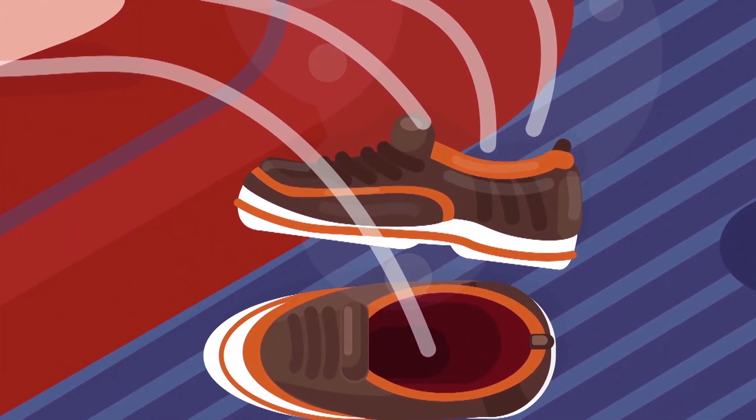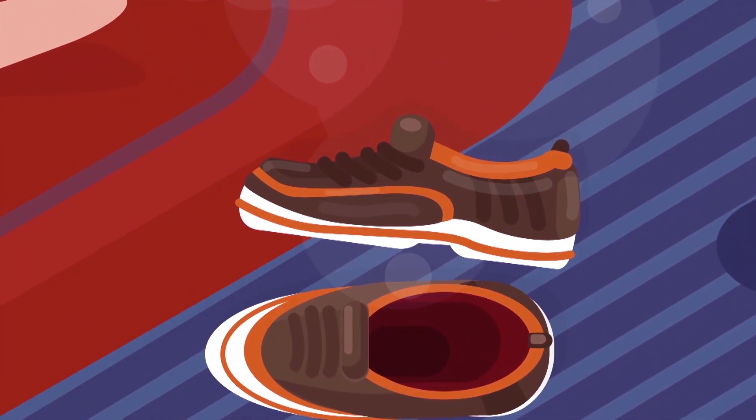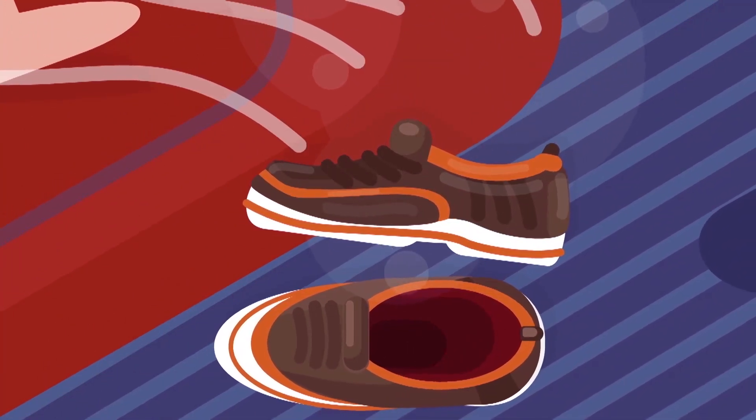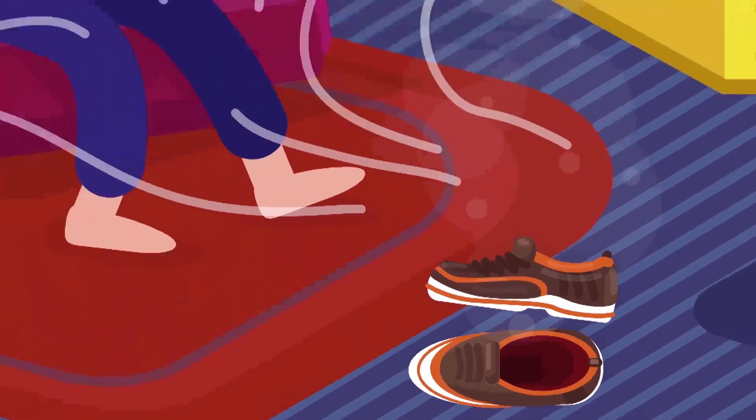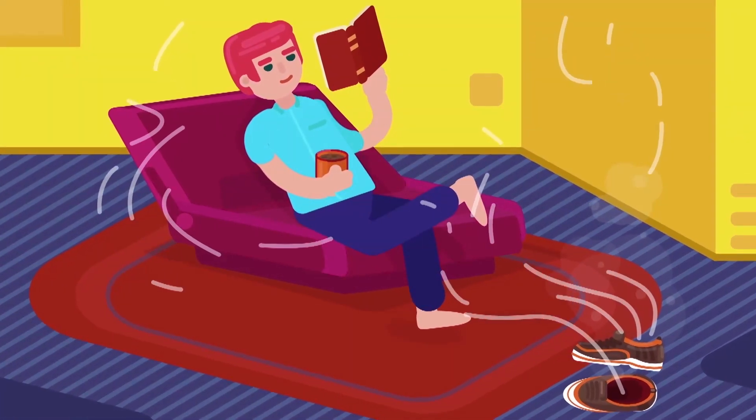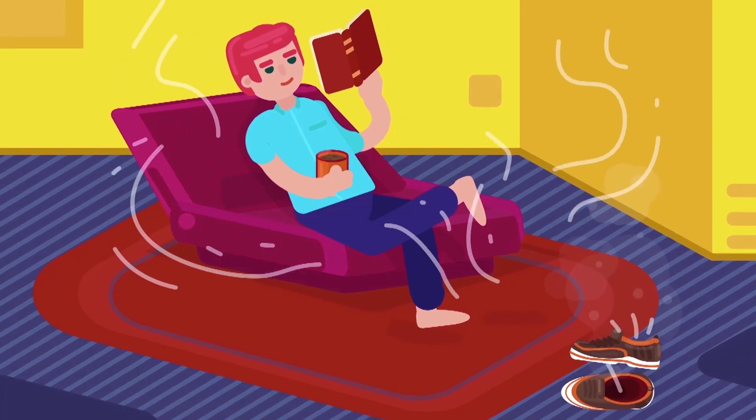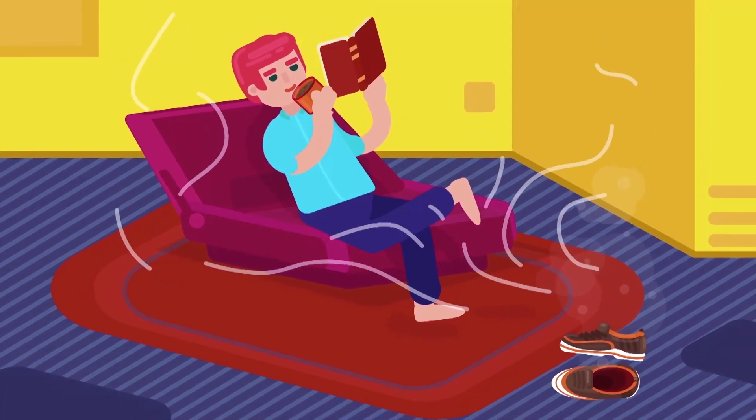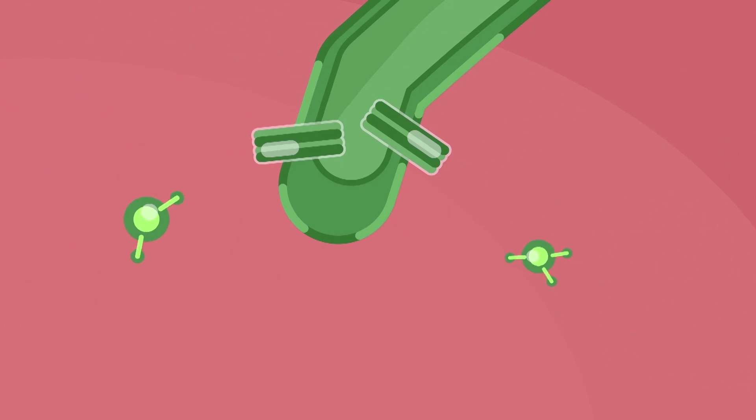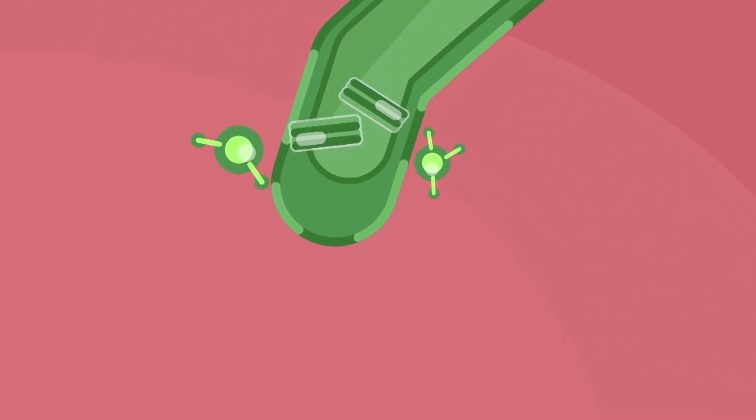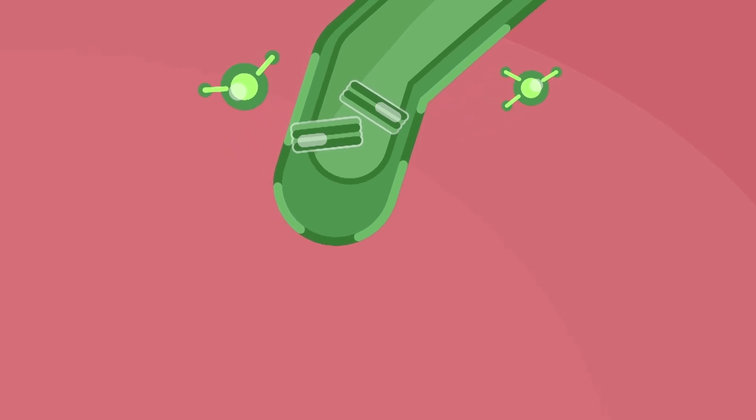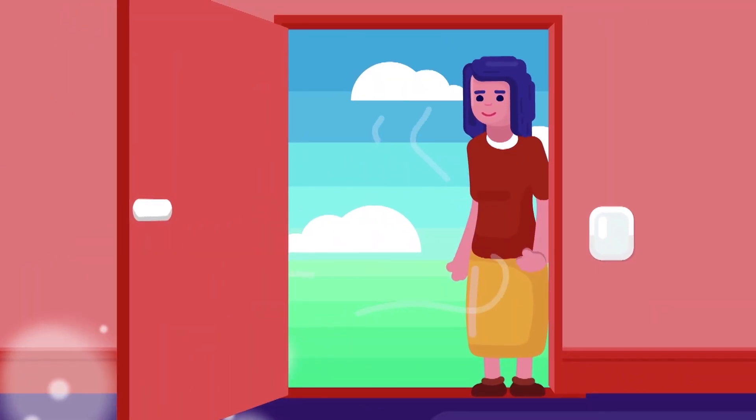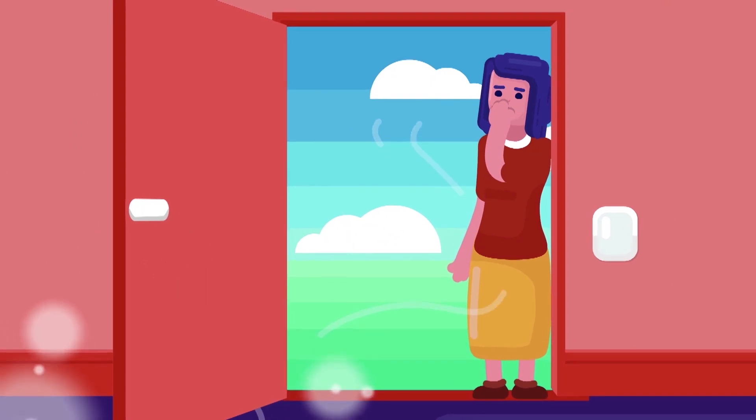If certain olfactory receptors are exposed to the same odor over and over again, we become temporarily desensitized to the smell. This is how we can become nose-blind to bad smells in the house, such as a stinky dog or smelly shoes. It's as if the olfactory receptors that are sensitive to these odors need a break. The receptors move inside the cells so they're no longer on the surface. Great for you, but not so much for your friend who just popped over for a visit.